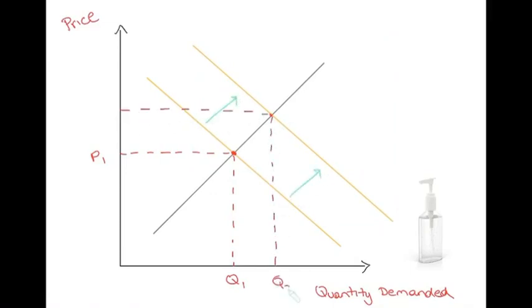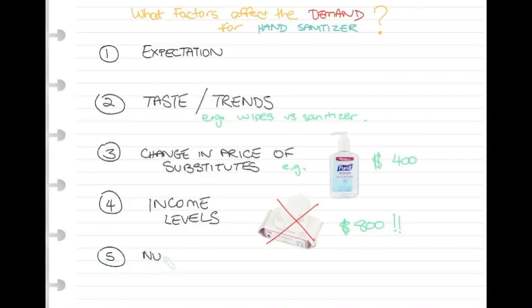Other factors that can shift demand are income levels and the effect of the number of consumers in an area. Now you see how these factors affect demand and supply for hand sanitizer. Thanks for tuning in to Theory Thursdays at GetThem.